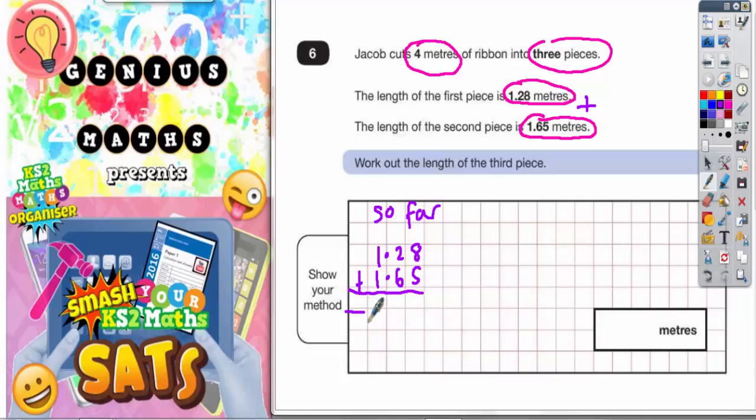We're doing a column method addition. So 8 plus 5 is 13, put the 3 in and carry the 1. 2 plus 6 is 8 plus the 1 is 9. And 1 plus 1 is 2. Don't forget your decimal point. So you've cut off so far 2.93 meters.